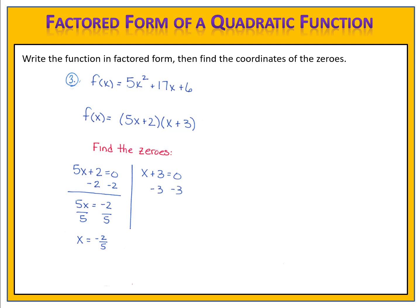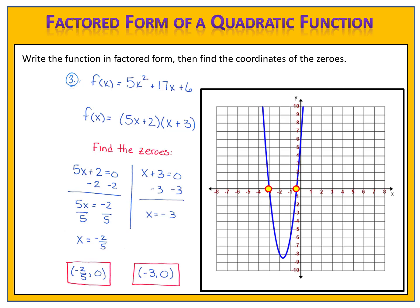Solving each of those equations — the first one ends up as a fraction: x equals negative 2 fifths. That's okay. The second equation gives us x equals negative 3. We have a zero at negative 2 fifths comma 0, and a zero at negative 3 comma 0. If we look at the graph, we see those are the positions of our zeros. It all comes down to being comfortable with factoring — if you can factor, you can easily find the zeros.